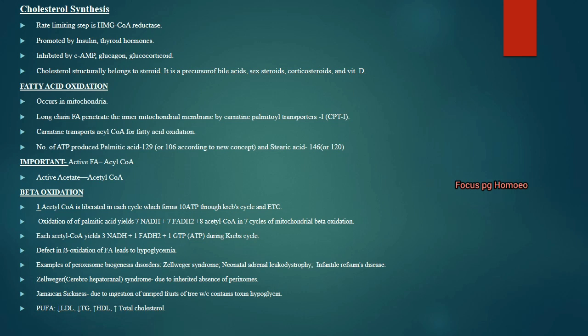The number of ATPs produced from palmitic acid is 129, and from stearic acid it is 146. In each cycle of beta oxidation, acetyl-CoA liberated forms 10 ATP through the Krebs cycle and electron transport chain. Oxidation of palmitic acid yields 7 NADH, 7 FADH2 and 8 acetyl-CoA.